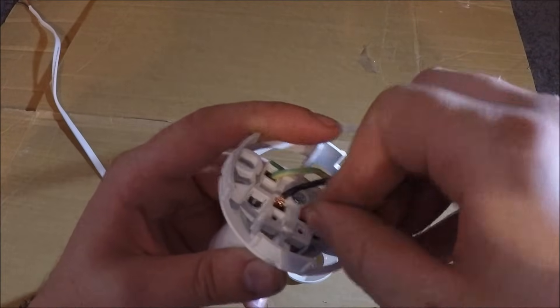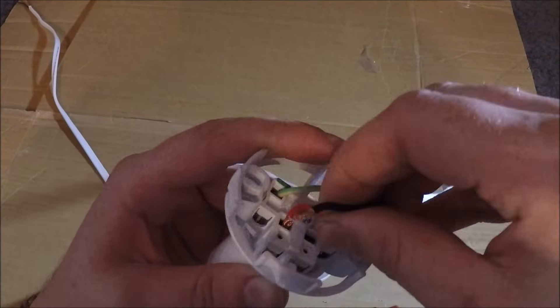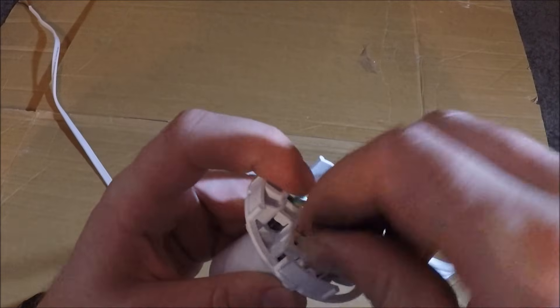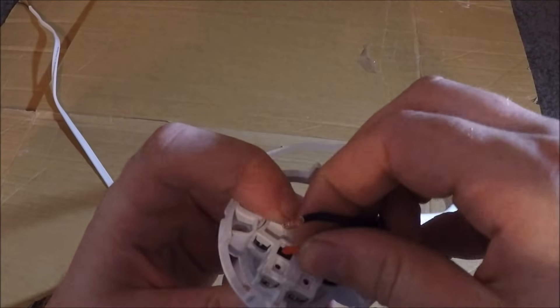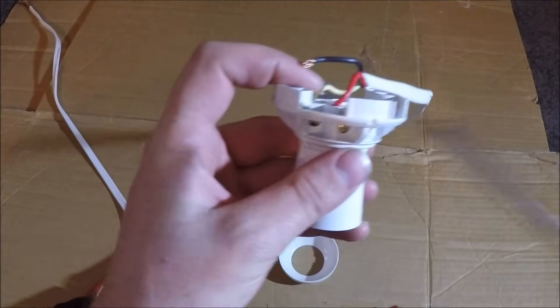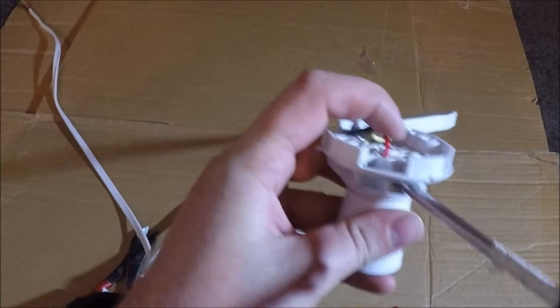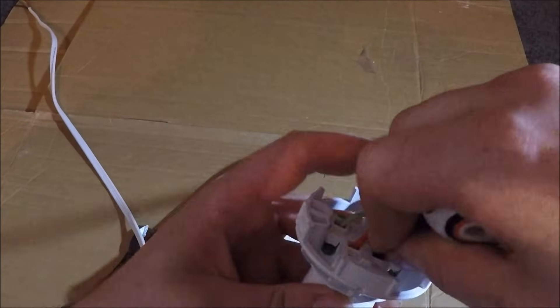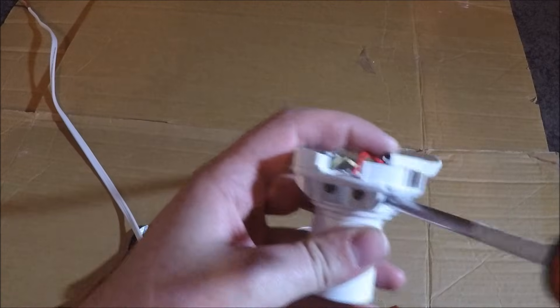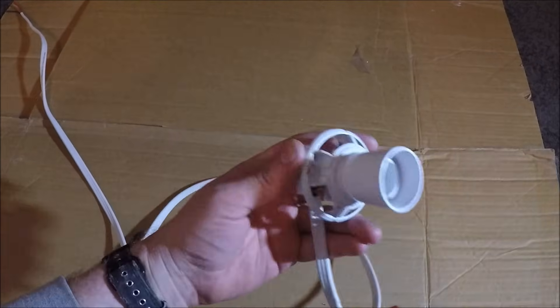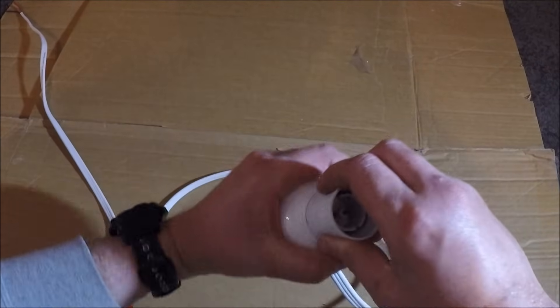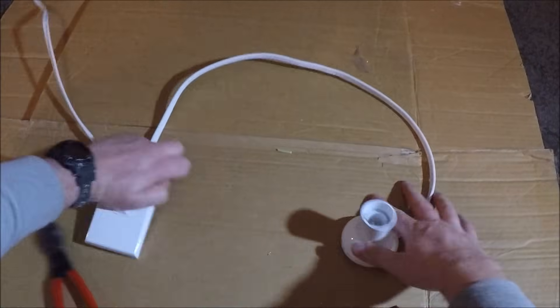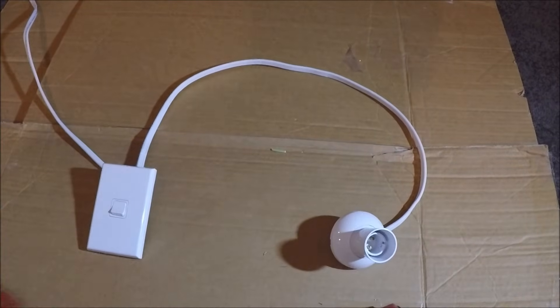So I can go black in there, red in there, or I can go red in there and black in the other one. And so that's it. That's how you do a simple lighting circuit.